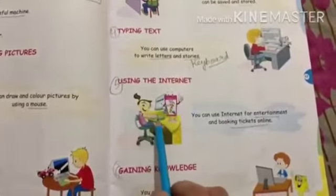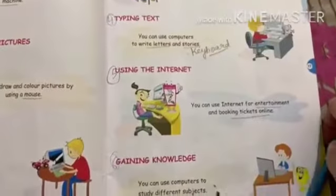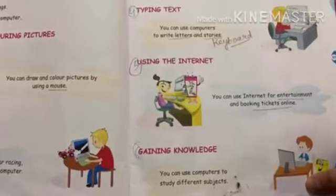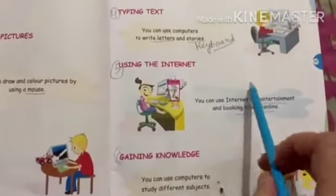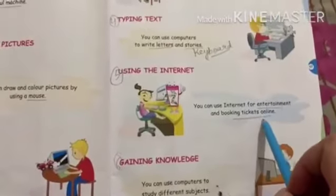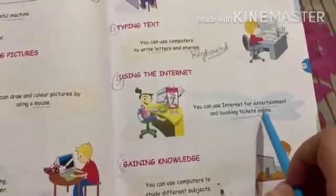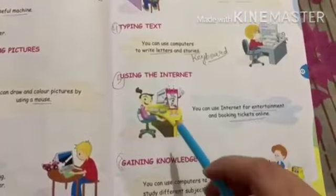The fifth use is the internet. Online means you can do online activities — you can do networking, you can book tickets, you can do entertainment and watch movies, you can play games online, and you can watch cartoons. So your favourite activities can be done online using the internet on the computer.